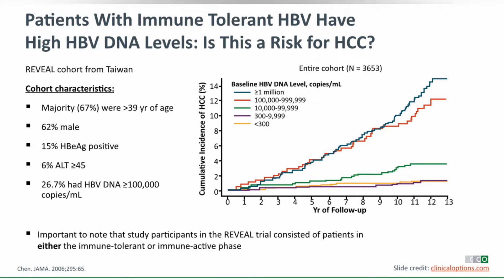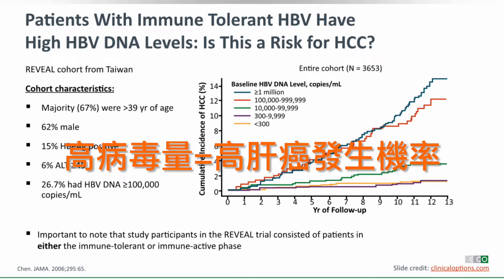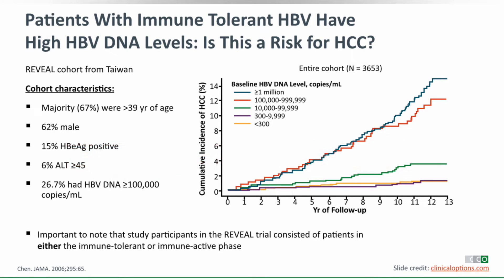There is significant concern that immune-tolerant patients have very high levels of virus. Data from many studies show that in natural history, viral load is a predictor of future risk of complications — whether cirrhosis or liver cancer. The most-cited study on this relationship is the REVEAL study, published in 2006, a cornerstone of our understanding of the relationship between viral load and outcomes.